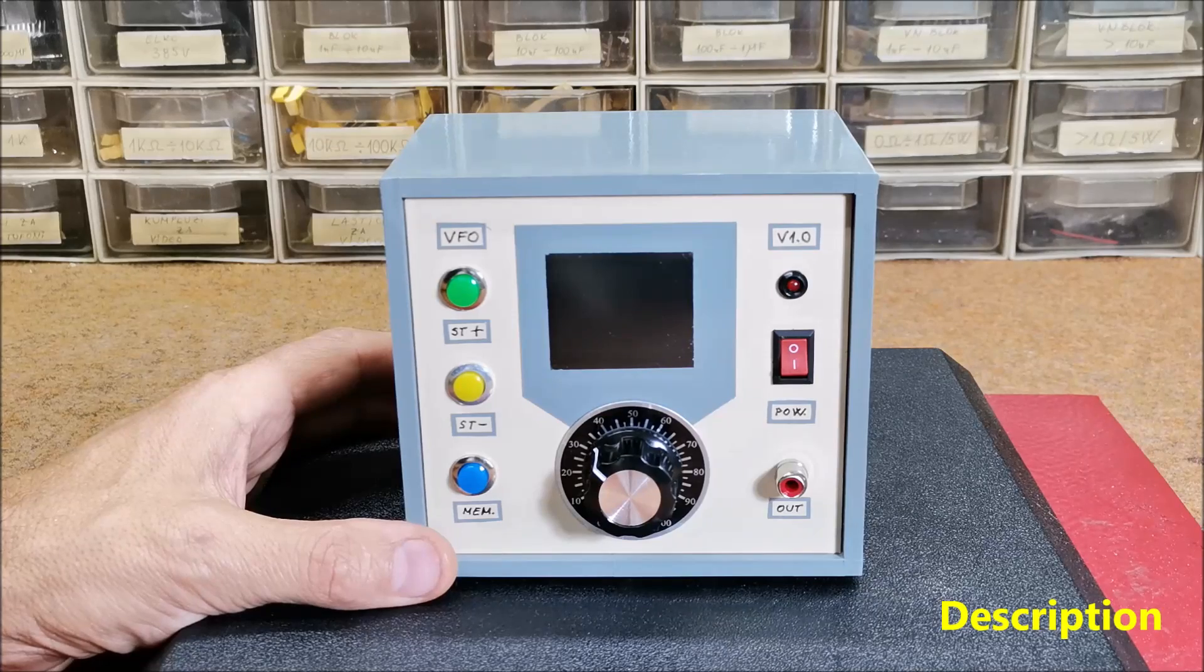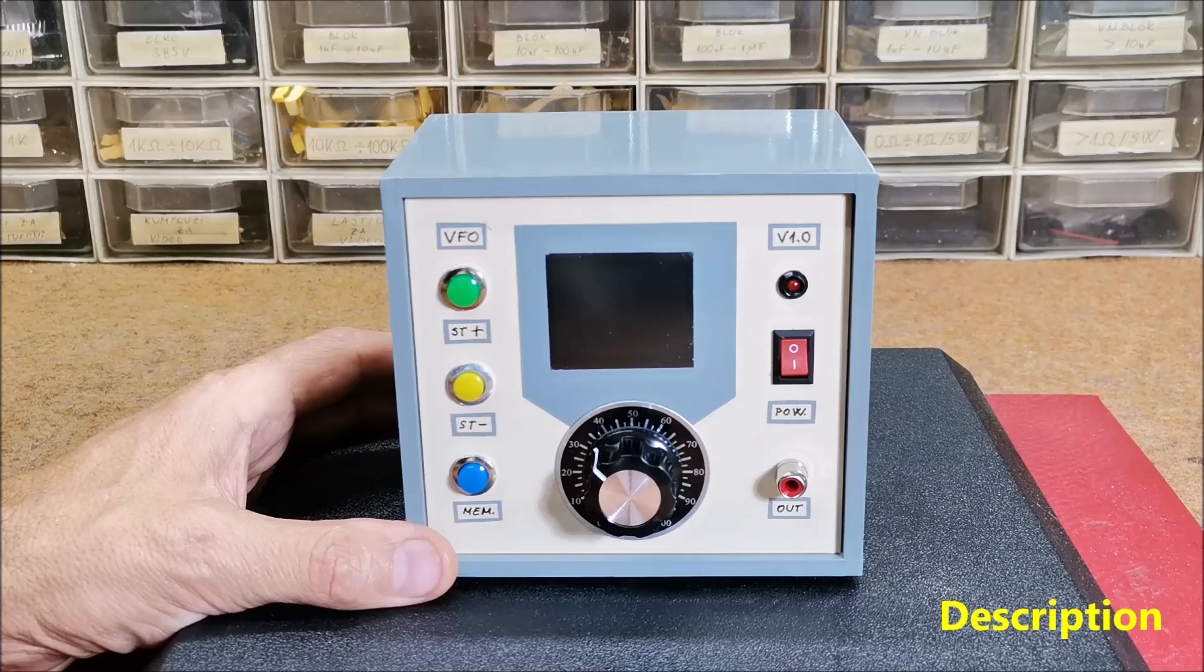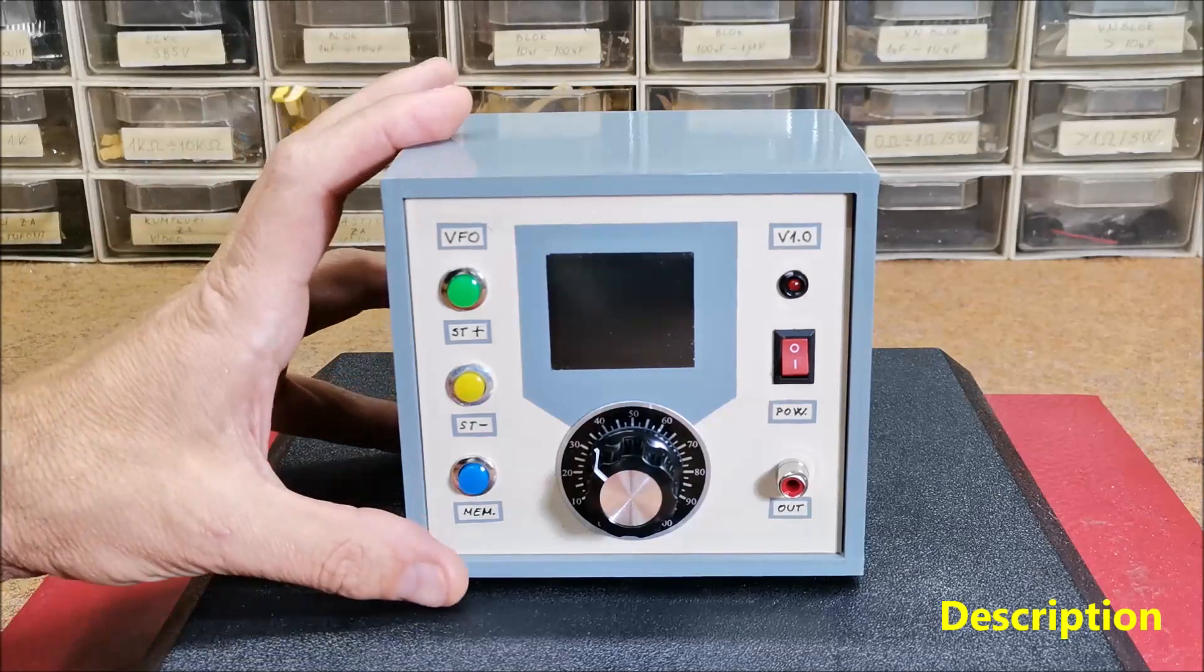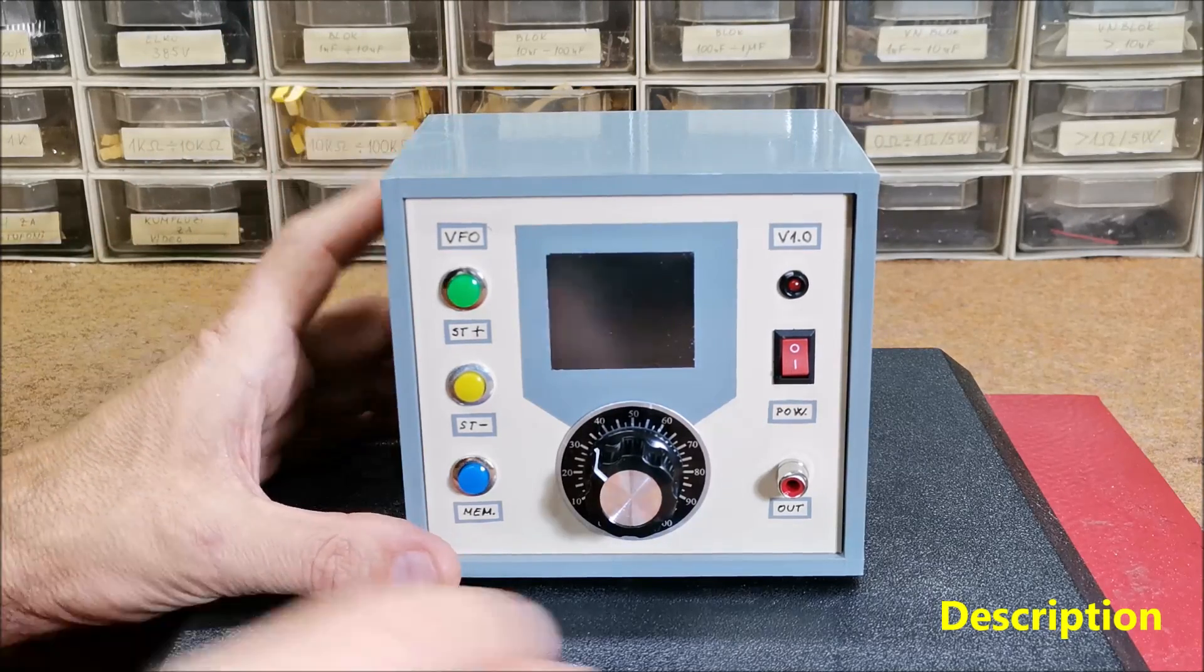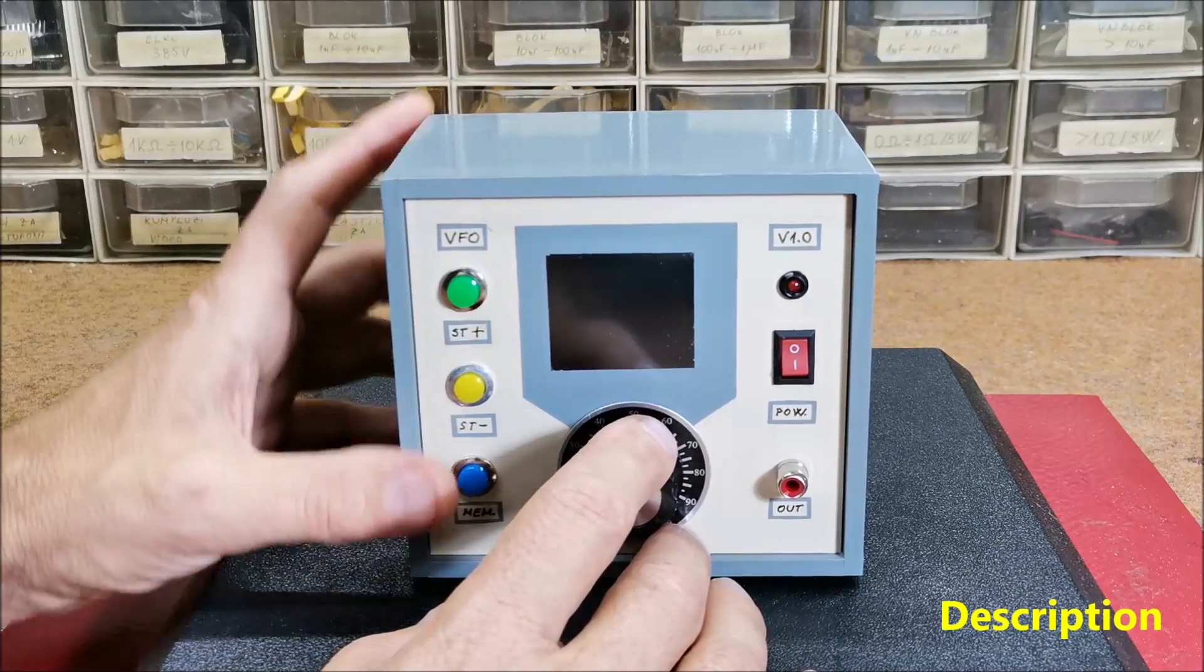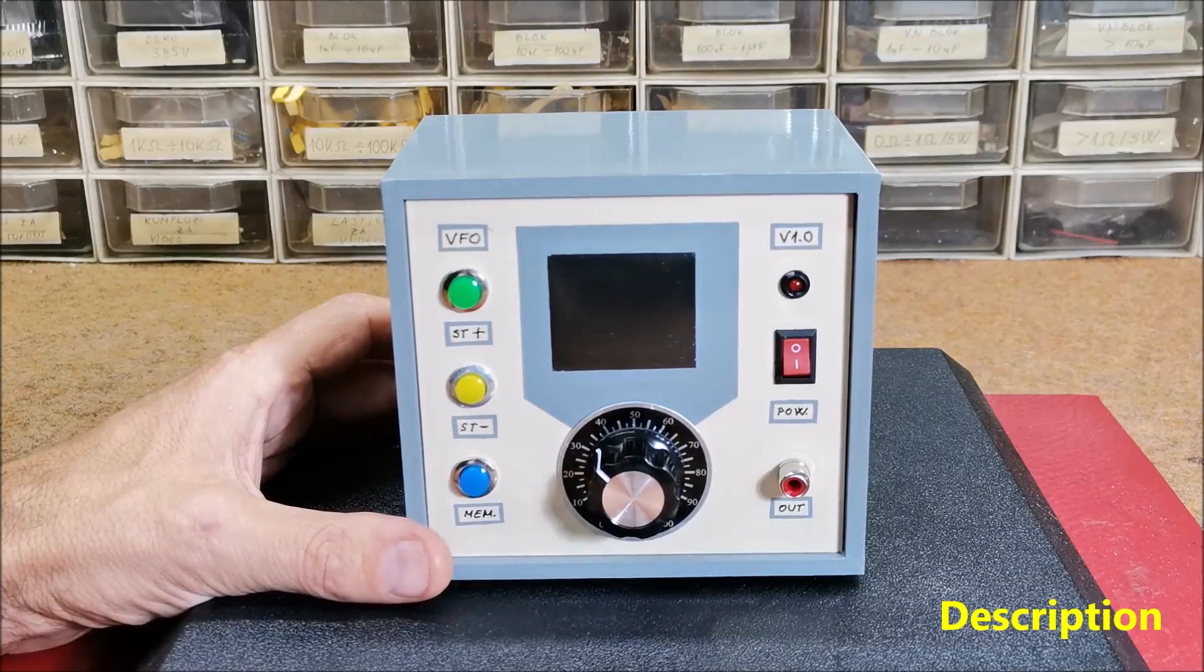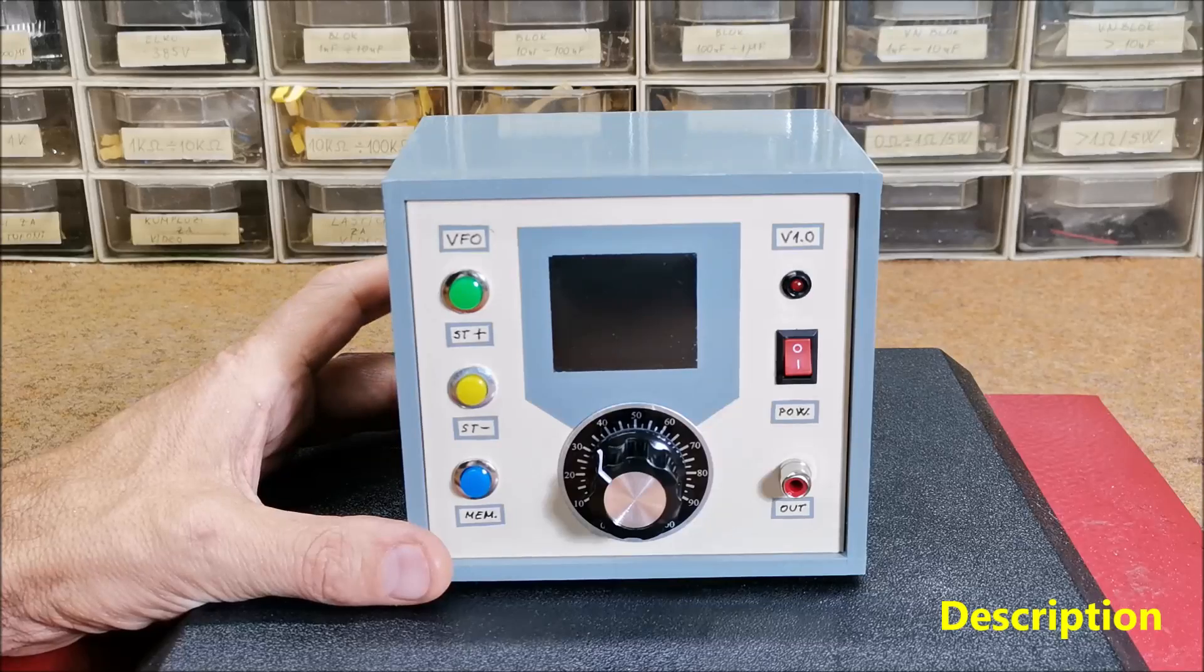About two years ago in one of my previous videos I made a small shortwave radio receiver with this VFO, but the current version has additional functions for changing the tuning step as well as storing frequencies. These options drastically simplify the operation of the device.